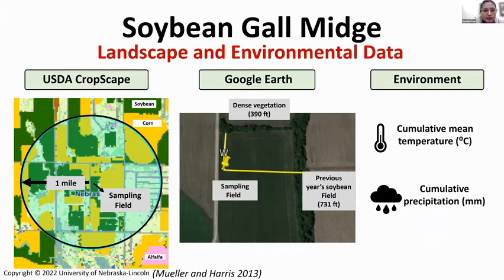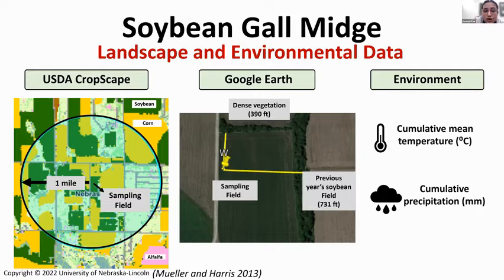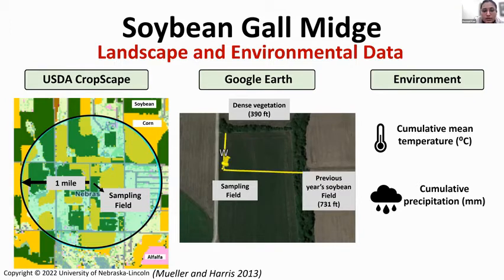After collecting stems of soybean and sweet clover plants — up to three plant stems per field — we brought them to the lab and counted the white larvae, orange larvae, and total larvae per stem. We also collected land use data in a one-mile radius of each sampled field from USDA CropScape, and collected data from Google Earth regarding distance of dense vegetation — tall trees or tall grasses — from the field, as well as distance from the previous year's soybean field, since the overwintering generation comes from there.